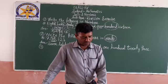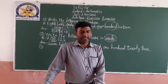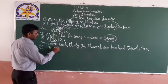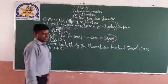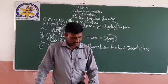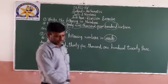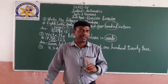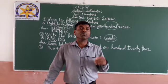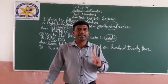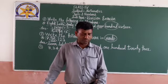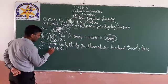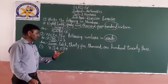Find the sum of place values of 3 and 7 in 8,34,579. Check it again — 8,34,579. Read the question carefully. This is very important — you should read the question carefully, understand what is asked, and then solve. Don't be in a hurry. Find the sum of place values of 3 and 7. Sum means addition — total.